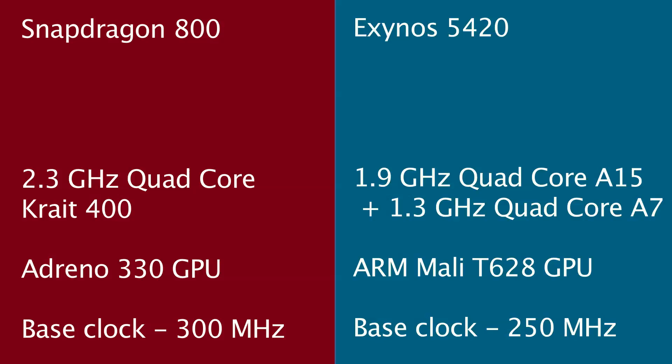The major differences between the two chips are that one is quad-core while the other is octa-core, but technically since only four of those eight cores can work at a time, it is effectively a quad-core processor too. The other difference is the GPU — the Exynos version has a six-core Mali T628 chip while the Snapdragon 800 version has the quad-core Adreno 330 graphics.